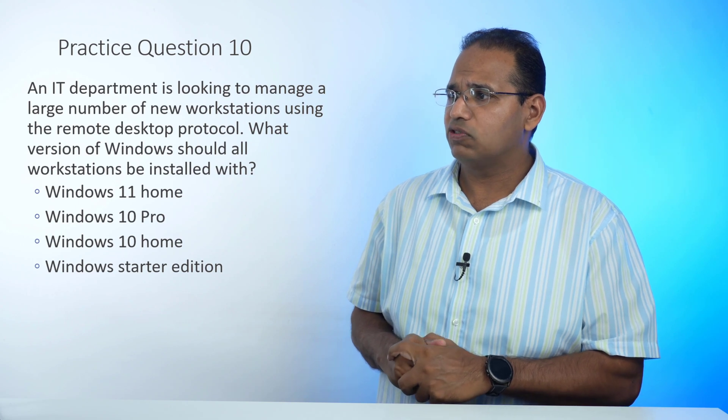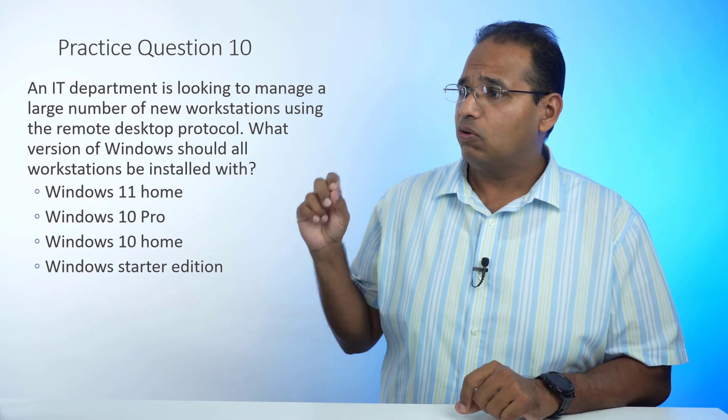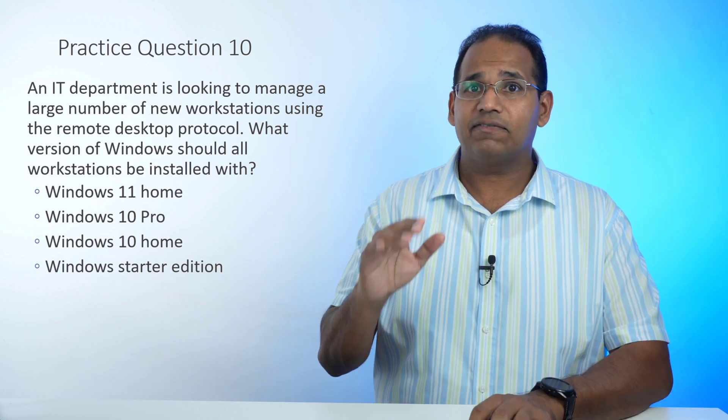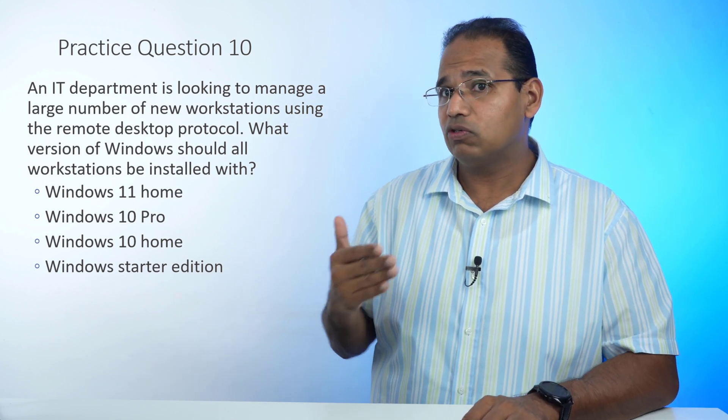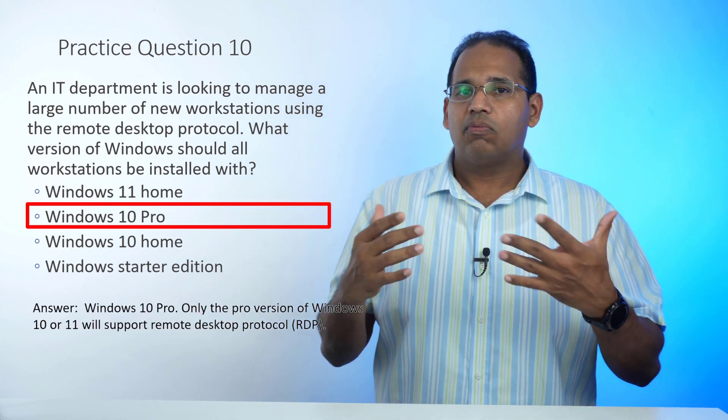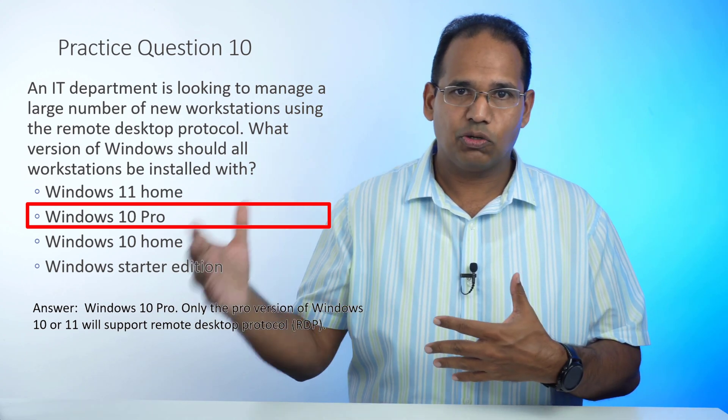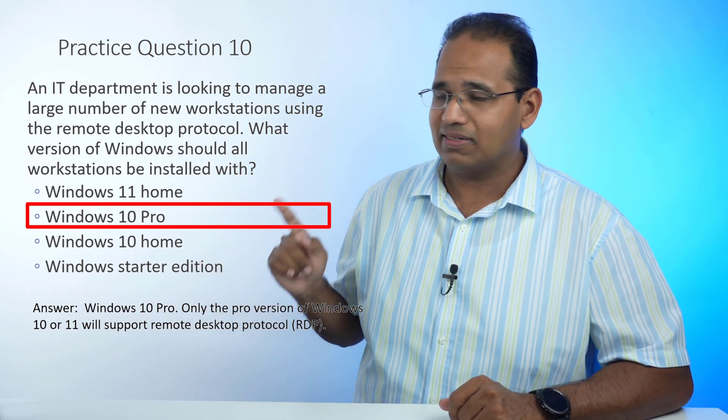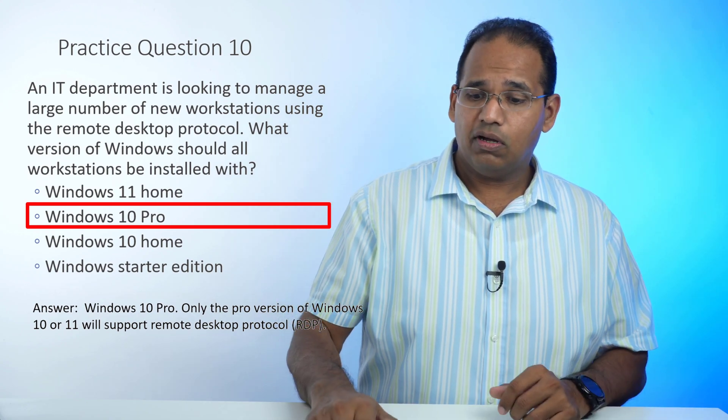Last question: An IT department is looking to manage a large number of new workstations using Remote Desktop Protocol. Which version of Windows should be installed? Windows 10 Pro and Windows 11 Pro support remote desktop and domain joining — something Home Edition and Starter Edition do not. Make sure you know the features of different versions of Windows. Those are my 10 questions. Click like, subscribe for more practice question videos, let me know in the comments, and join me in live classes or e-learning courses — links are below.